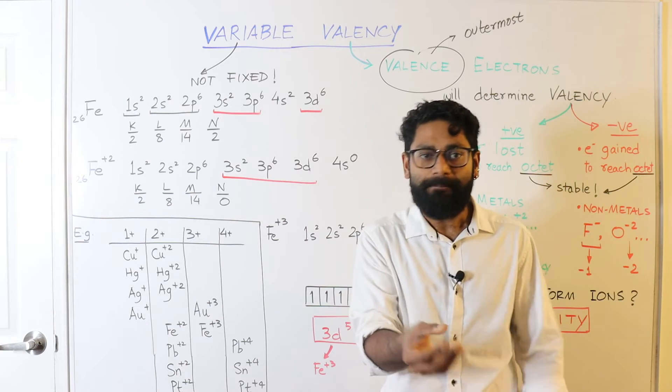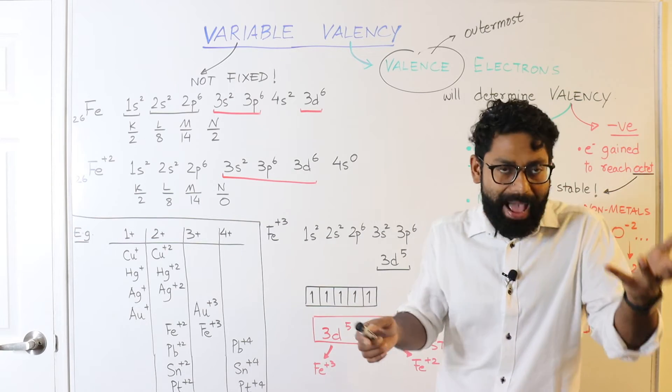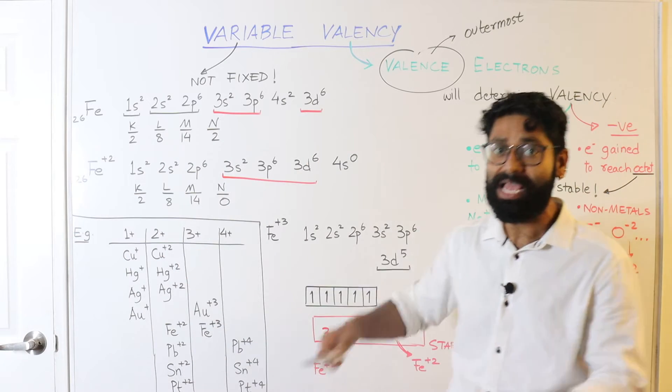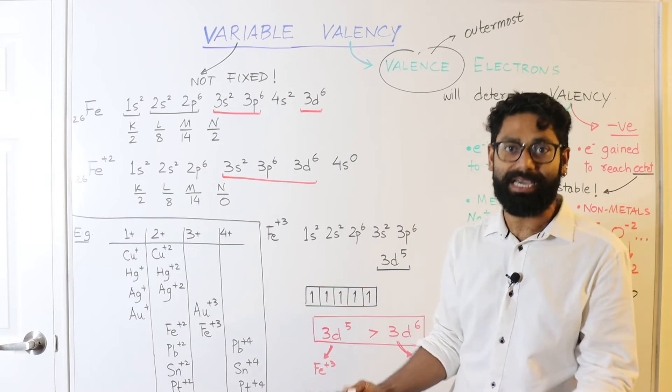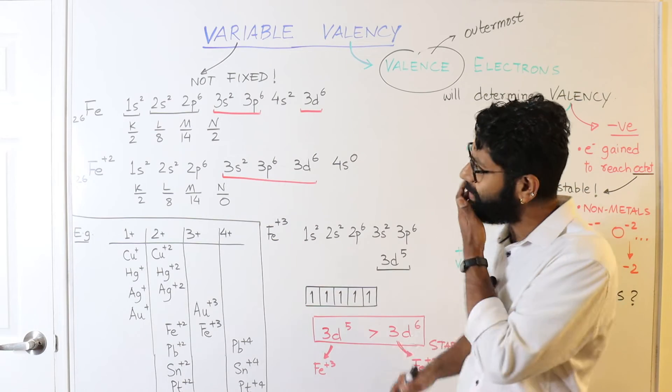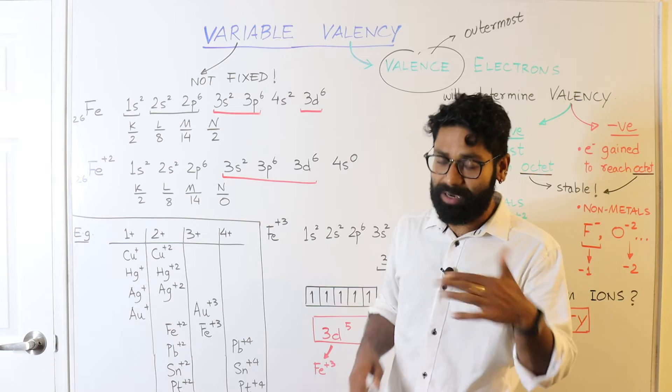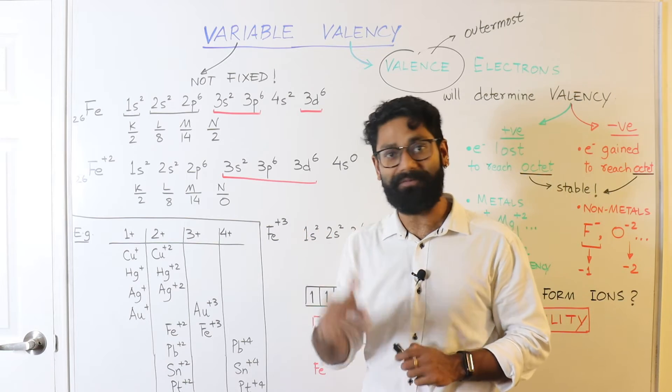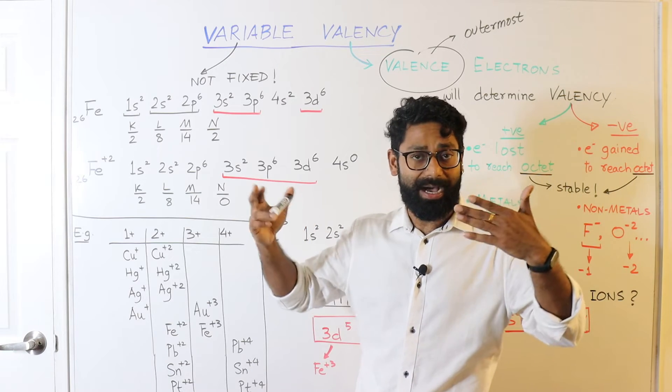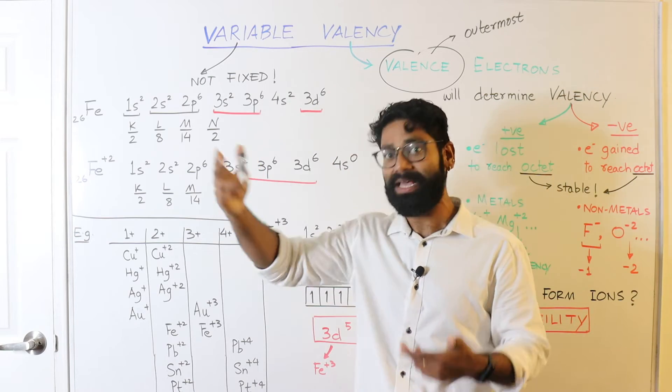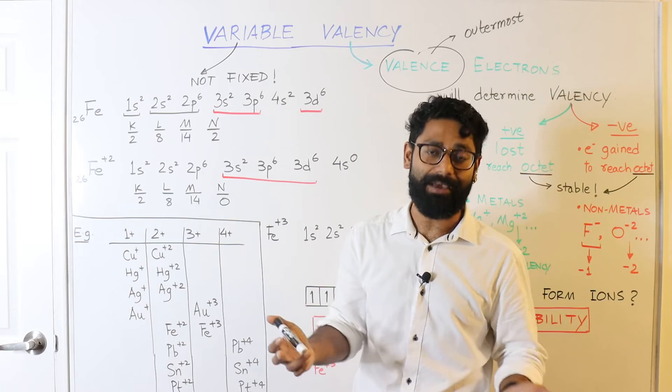Now, if we want to explain why a simple atom like iron is forming two valencies or variable valencies, we have to understand its electronic configuration. So everything comes back to electronic configuration. If you know the SPDF format of writing the configuration of electronic configuration, so there are two ways: the Bohr's principle, which is like the KLM style, and there's this SPDF.